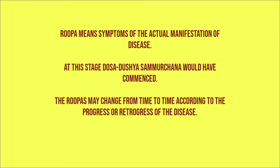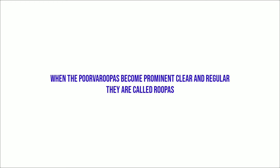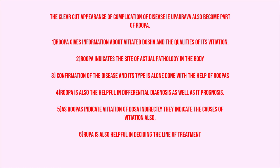Rupa means symptoms of the actual manifestation of disease. At this stage, dosha samurchana would have commenced. The rupas may change from time to time according to the progress or retrogress of the disease. When the Purvarupas become prominent, clear, and regular, they are called Rupas. Clear-cut appearance of complications — Upadrava — also become part of Rupa. Rupa gives information about vitiated dosha and the qualities of its vitiation, and indicates the site of actual pathology in the body. Confirmation of disease and its type is done with the help of Rupa, which is also helpful in differential diagnosis and prognosis.